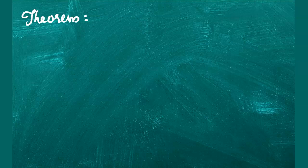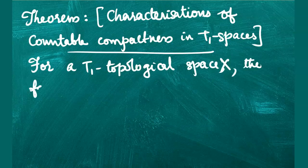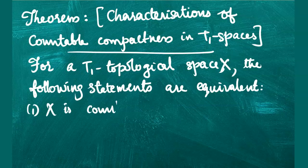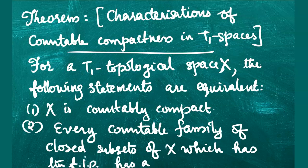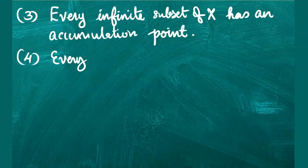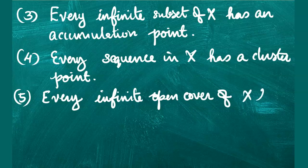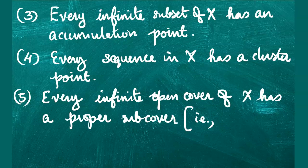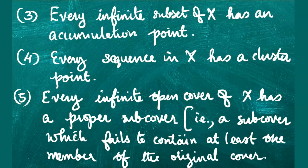This theorem gives characterizations of countable compactness in T1 spaces. For a T1 topological space, the following statements are equivalent: (1) X is countably compact; (2) every countable family of closed subsets of X with the finite intersection property has a non-empty intersection; (3) every infinite subset of X has an accumulation point; (4) every sequence in X has a cluster point; (5) every infinite open cover of X has a proper sub-cover, where a proper sub-cover is one that fails to contain at least one member of the original cover. The proof of this theorem is excluded from the syllabus.